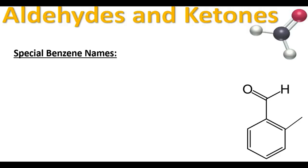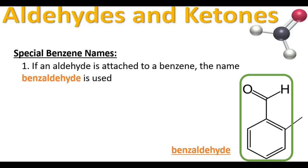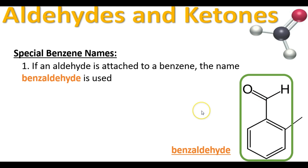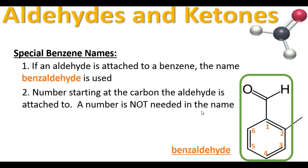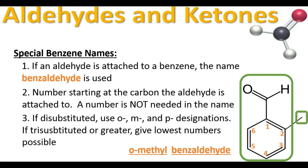Now let's get into some special benzene names with the aldehyde. If an aldehyde is attached to a benzene, the name is benzaldehyde. There's always a carbon coming off the benzene ring that we consider part of the aldehyde. We start numbering the benzene at the aldehyde, and a number is not needed in the name since it's always on the first carbon. If di-substituted, use ortho/meta/para designations; if tri-substituted or greater, give the lowest numbers possible. This one is ortho-methylbenzaldehyde.